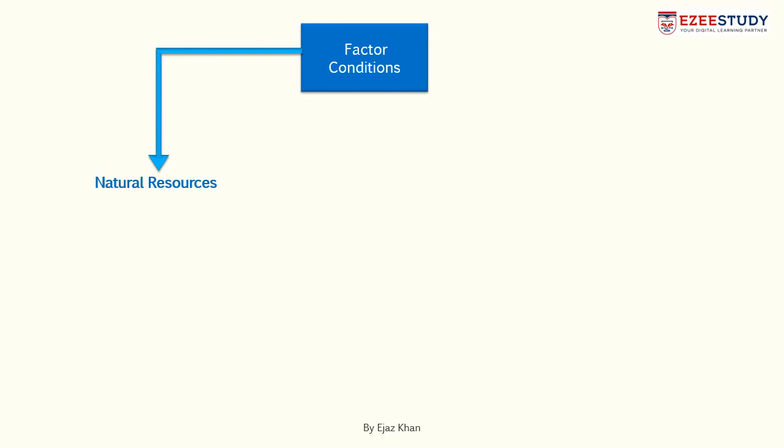The factor conditions are basically the natural resources that a nation has access to, the capital, and the human resource. When we talk about factor conditions, there will be basically two levels of factors — the basic ones and the advanced ones. The basic ones are the natural resources inherited by any nation and the unskilled labor. According to Porter, these factors do not give competitive advantage to a nation because these can be obtained by anyone else by investing money. What gives competitive advantage are the skilled labor and access to specialized capital.